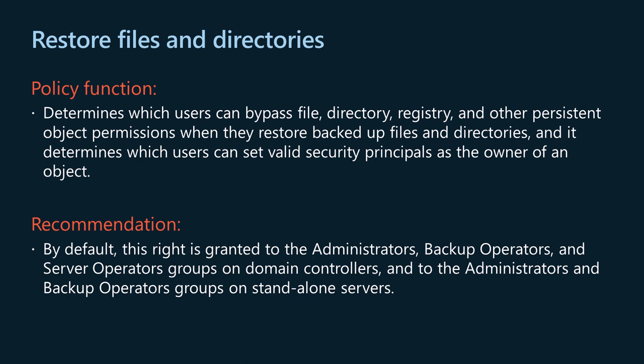The restore files and directories setting determines which users can bypass file, directory, registry, and other persistent object permissions when they restore backed-up files and directories, and which users can set valid security principals as the owner of an object. Granting this user right to an account is similar to granting traverse folder/execute file and write permissions to all files and folders on the system. Users with this user right can overwrite registry settings, hide data, and gain ownership of system objects, so only assign this user right to trusted users. By default, this right is granted to administrators, backup operators, and server operators on domain controllers, and to administrators and backup operators on standalone servers.